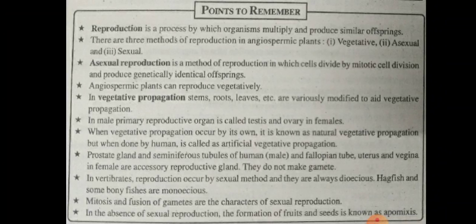The prostate gland and seminiferous tubules in the human male, and the fallopian tube, uterus, and vagina in the female, are accessory reproductive glands. They do not make gametes.